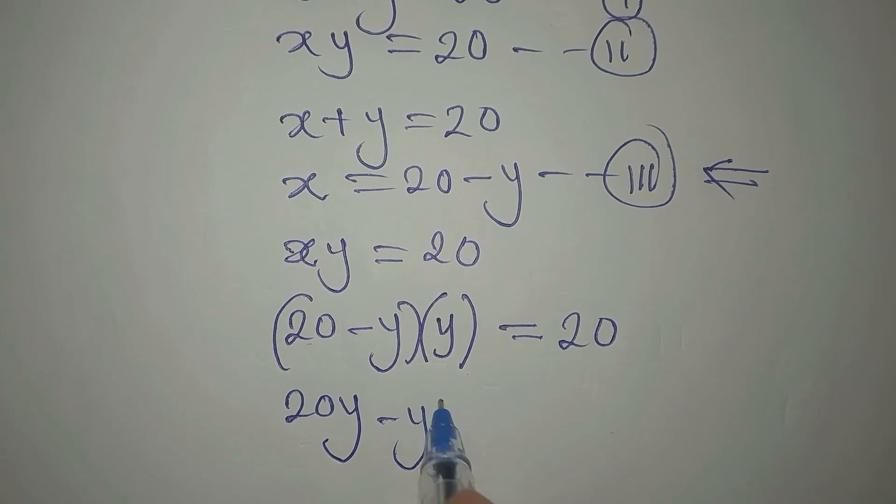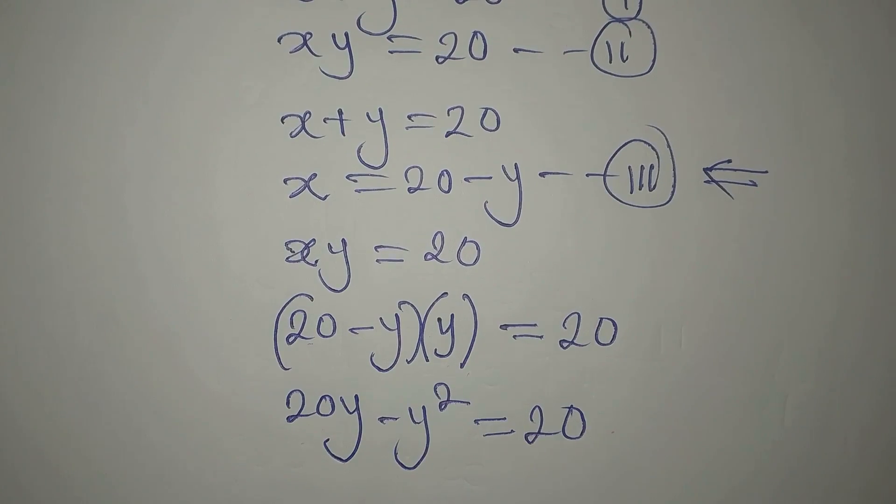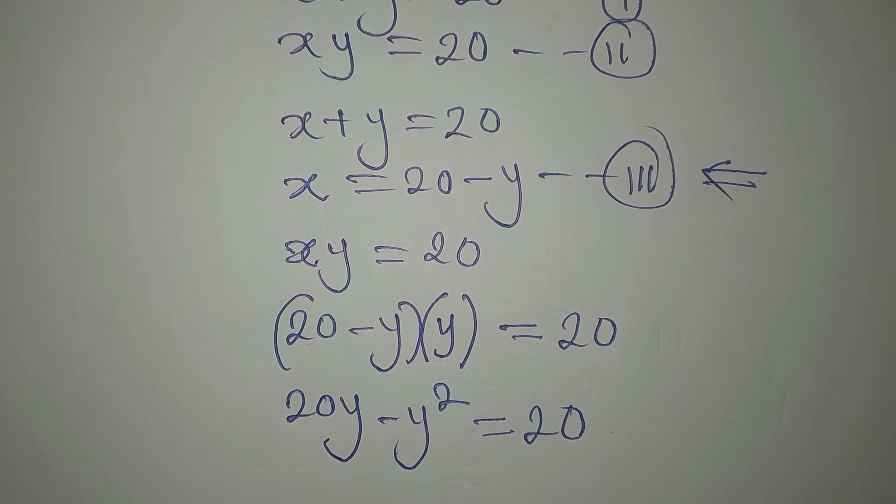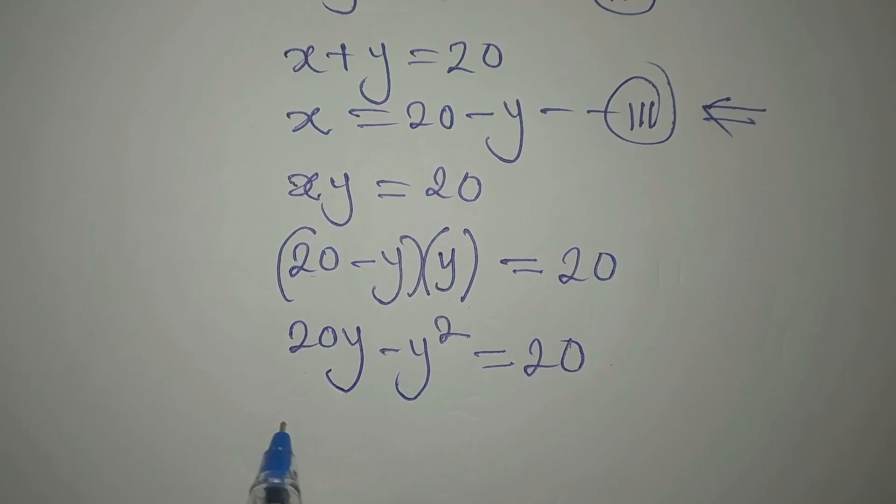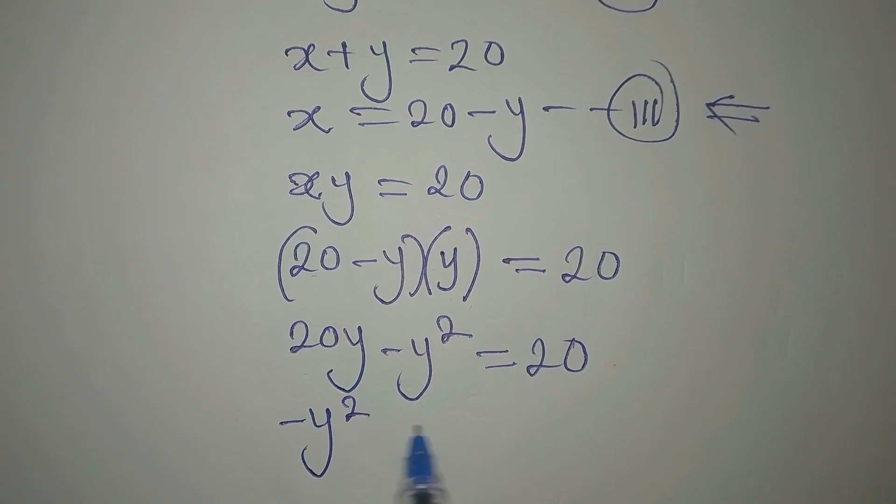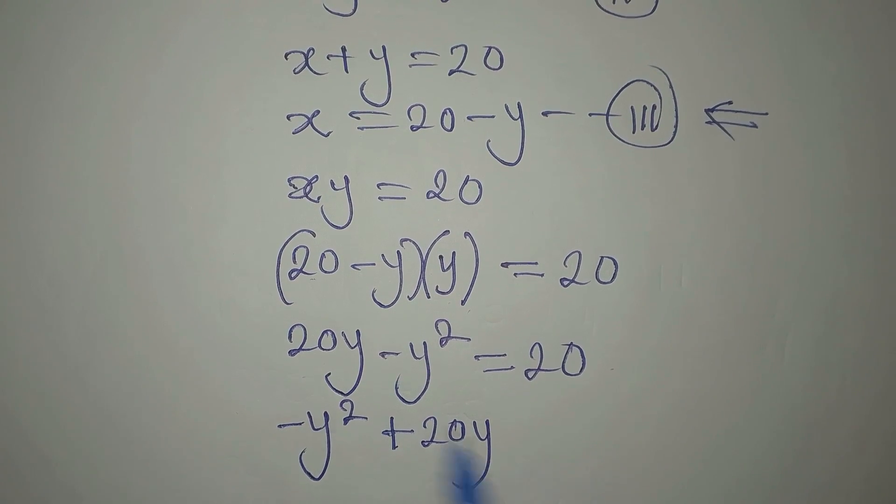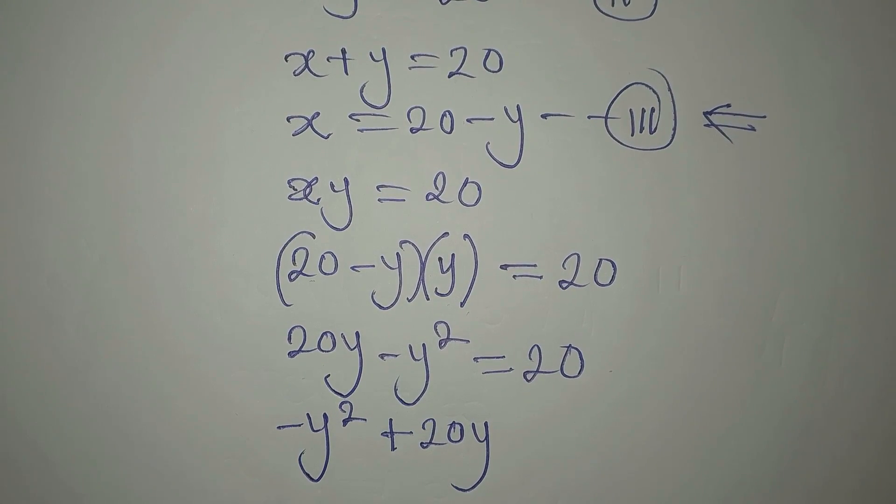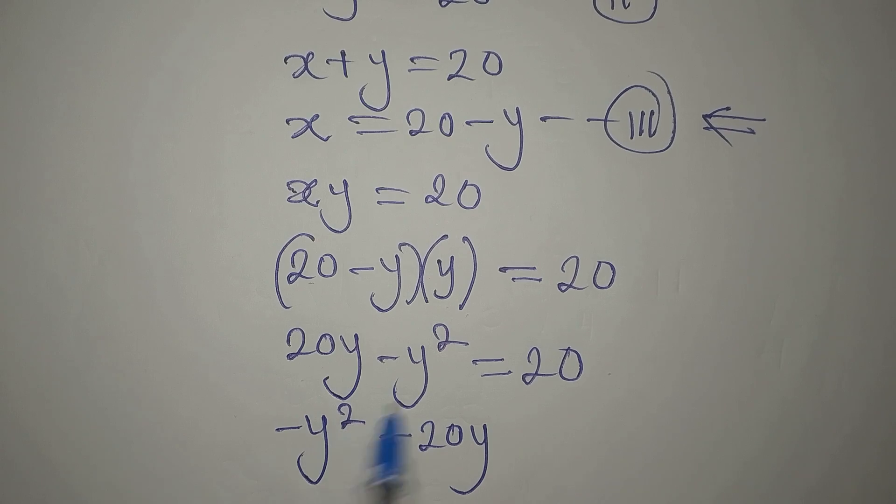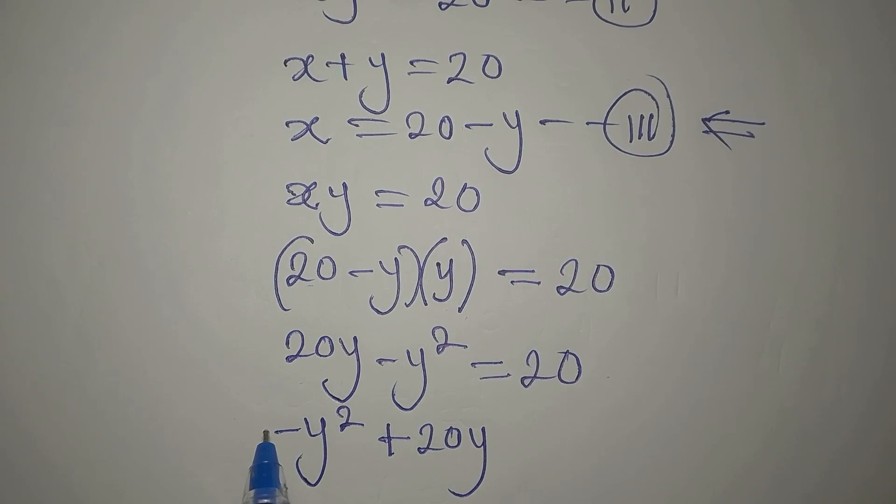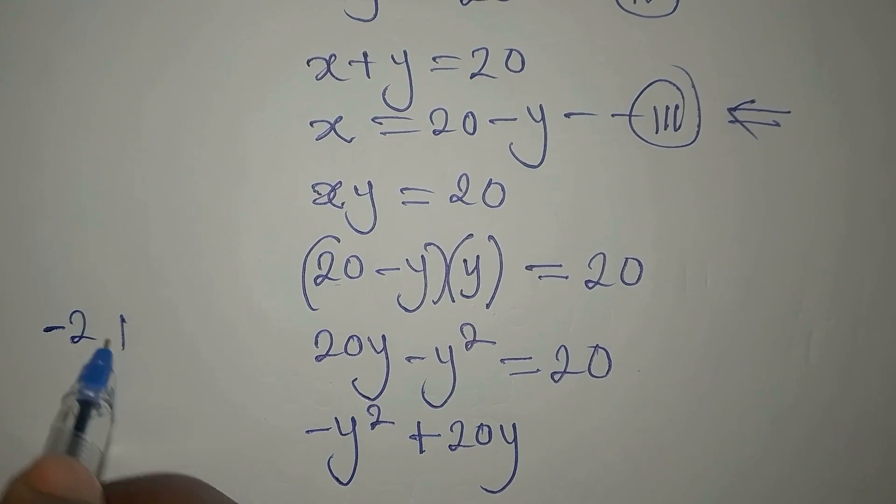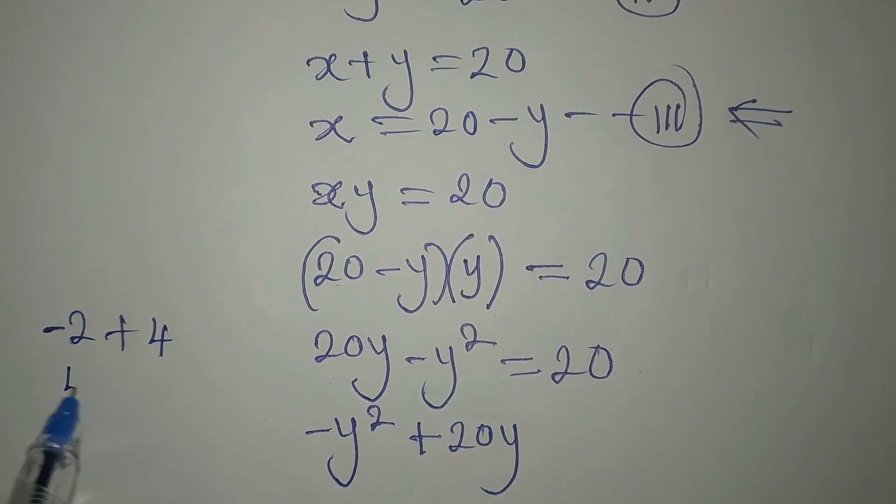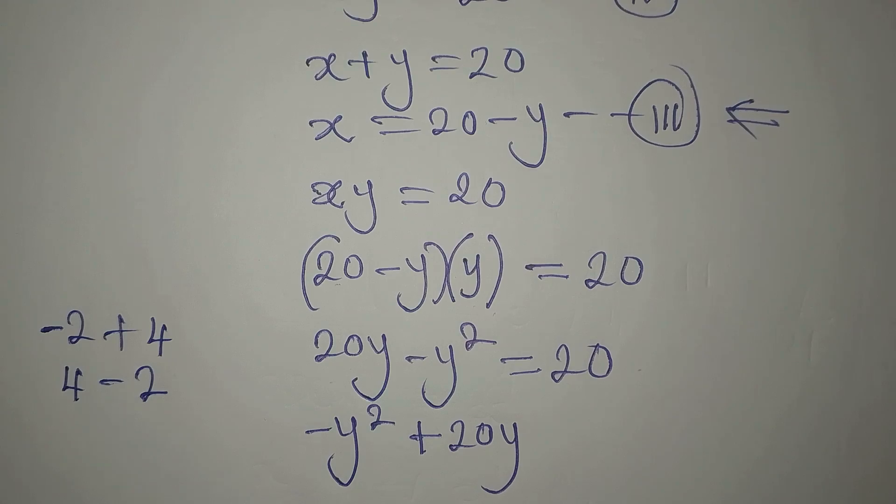20 times y is 20y minus y times y is minus y², and that is equal to 20. Now what should I do? Rearrange so that this will appear first: -y² + 20y, and it doesn't change anything because if you have -2 + 4, it's the same thing as 4 - 2.